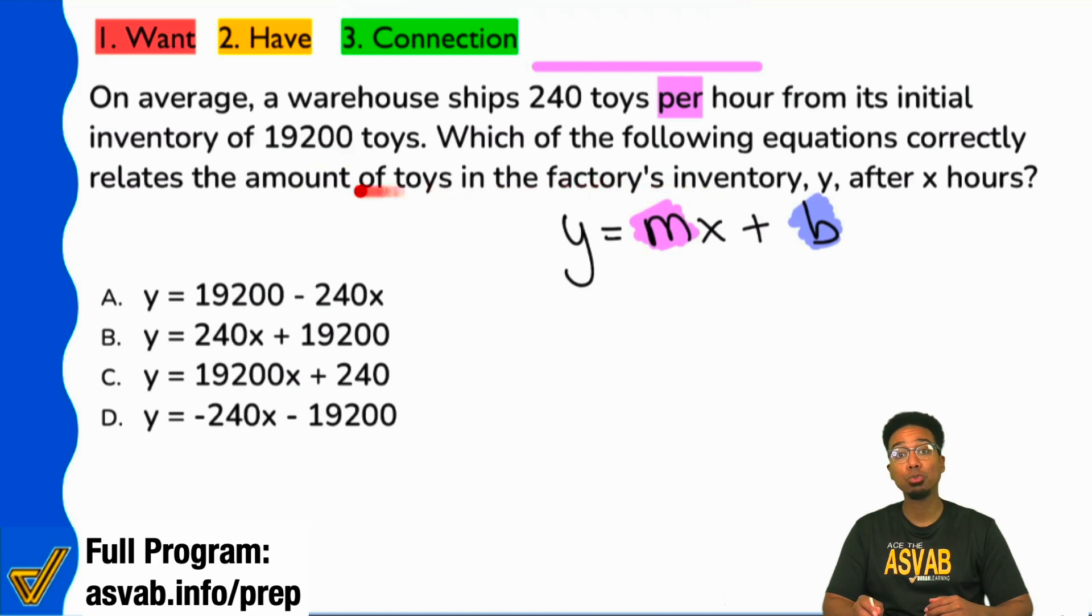...and we're shipping out 240 every hour, are we going to talk about that 240 as a positively impacting number or a negatively impacting number? Which one is it? Negative, exactly, because it's taking away from that beginning amount.